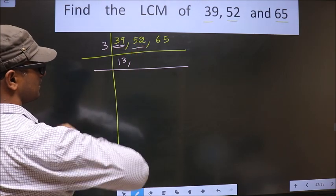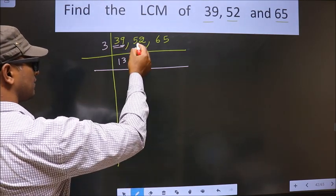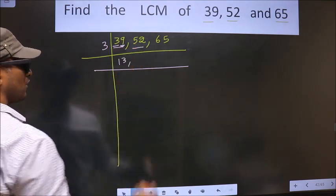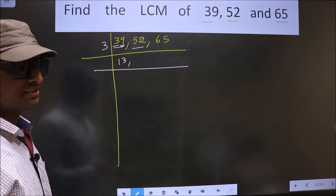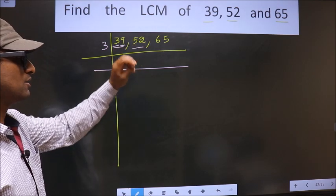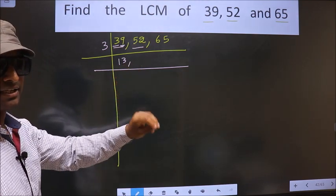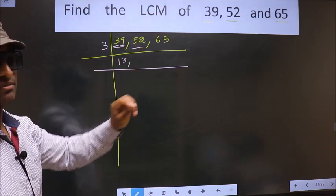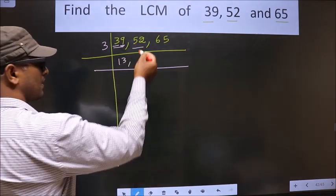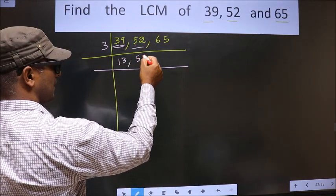Now the other number is 52. To check whether this is divisible by 3 or not, we add the digits. That is 5 plus 2, we get 7. 7 is not divisible by 3, so this number is also not divisible by 3. So you write down this number as it is.